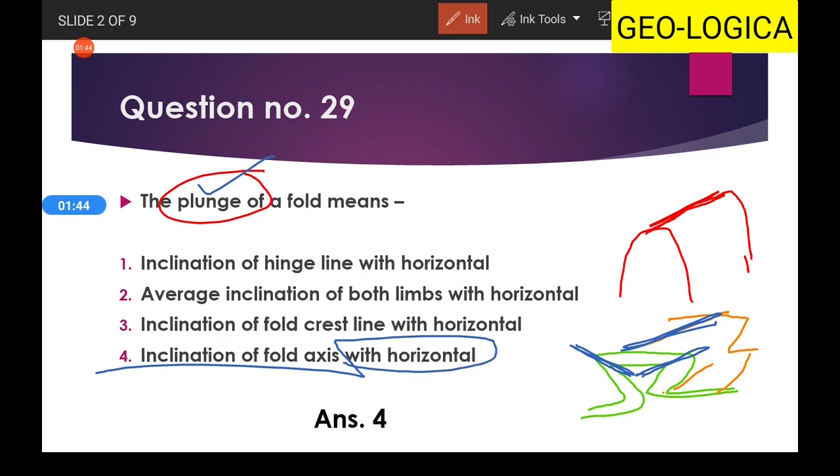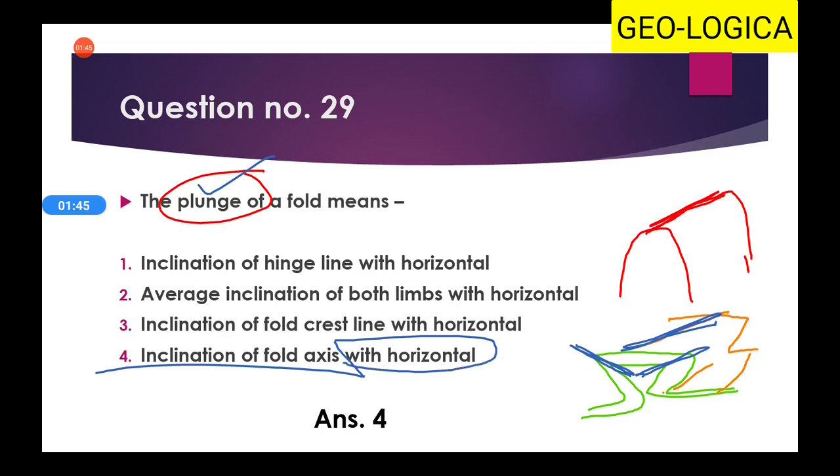The correct definition of plunge is the inclination of the fold axis with the horizontal. So the fourth option is the right answer. Don't confuse between the fold axis and the hinge line.